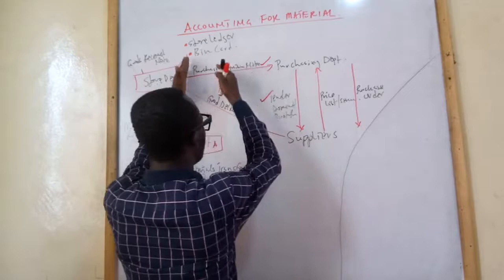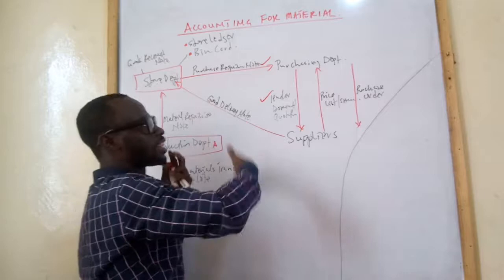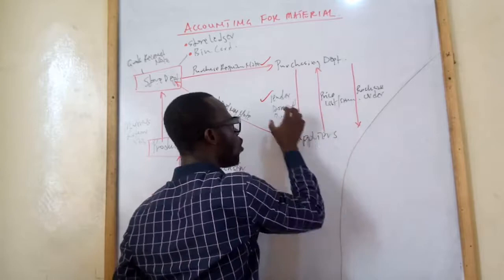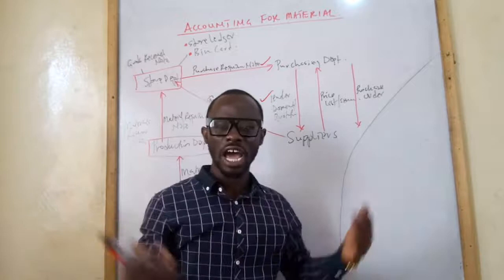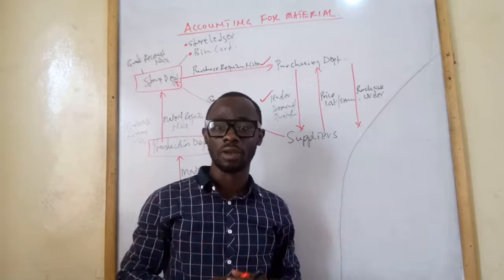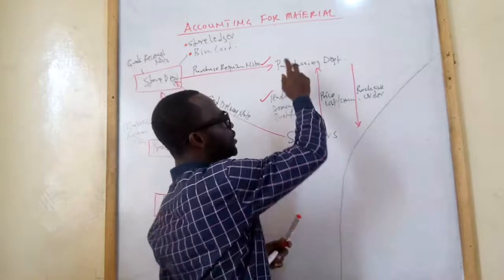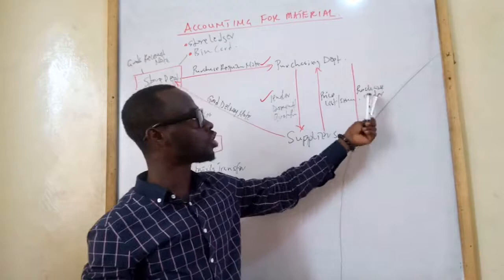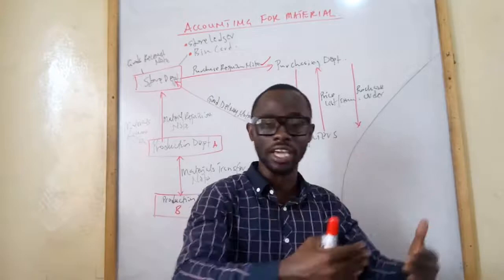The purchasing department issues the tender document to potential suppliers, who reply with their price lists, quantity, quality and other terms of supply. Once the purchasing department receives the completed tender documents from all potential suppliers, they choose the supplier that meets the organization's requirements. The purchasing department then prepares a purchase order — a document sent to the chosen supplier instructing them to send goods to the organization.